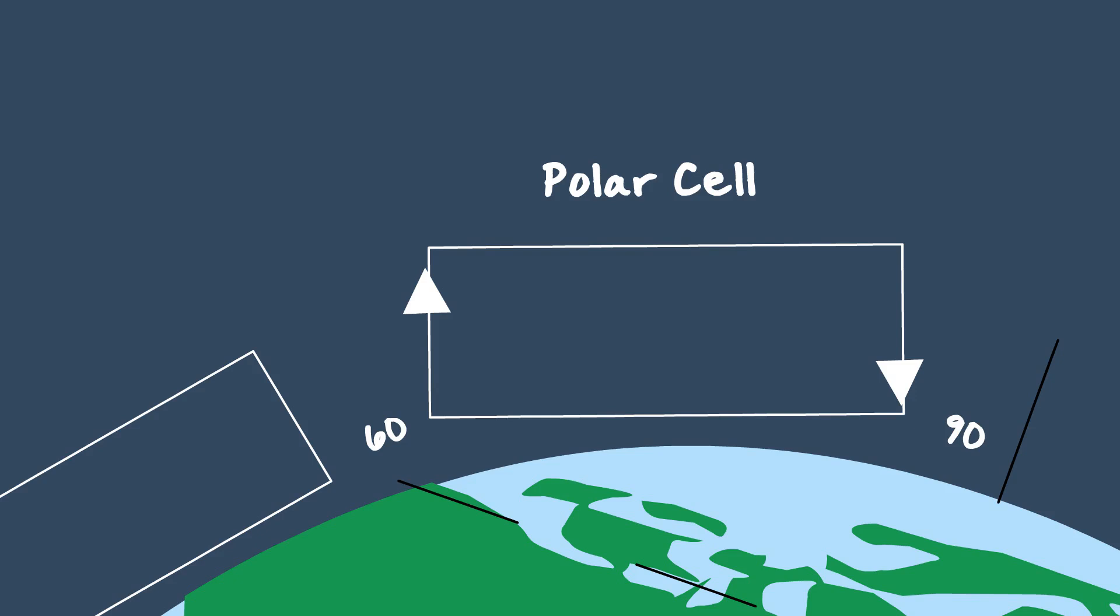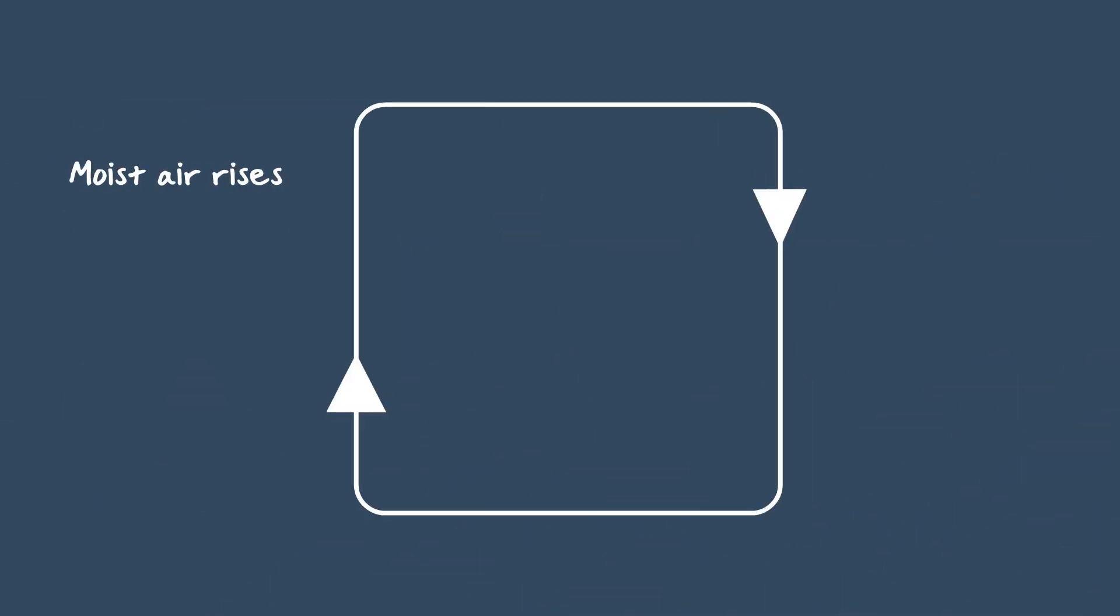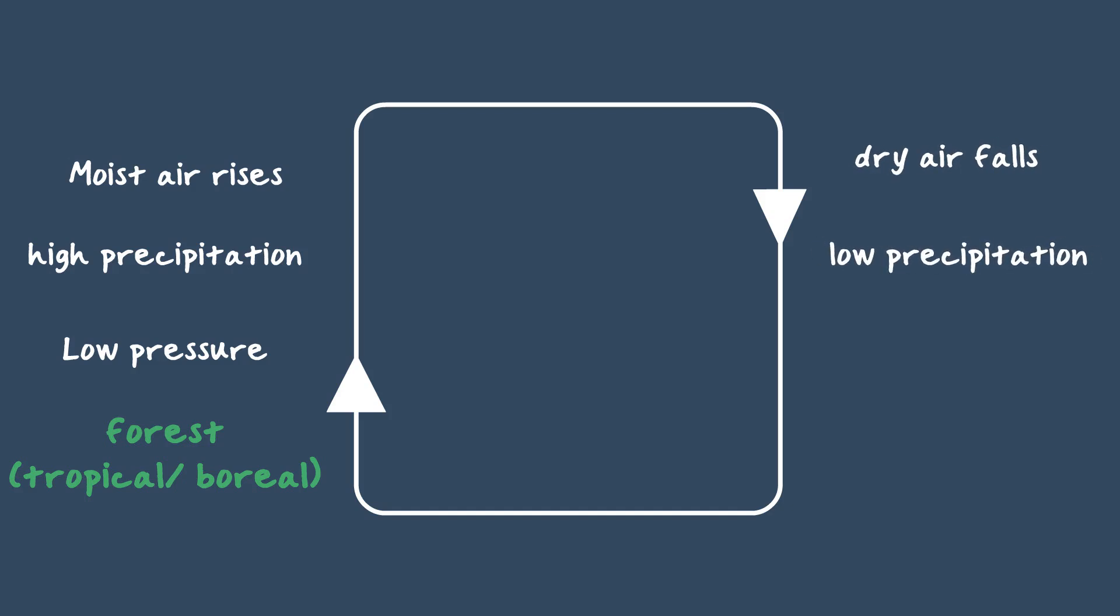To recap, wherever there is hot air rising, we generally have high precipitation. This translates to lower atmospheric pressure. You see vegetation-rich areas in places like this. Where there is cool air falling, the pressure is higher. Areas in these regions generally have less vegetation, like desert areas or the poles.